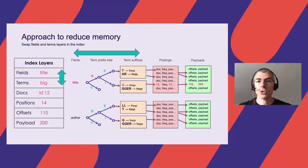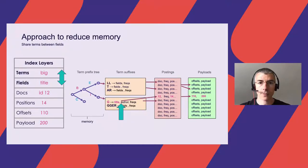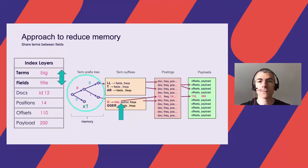To solve the memory and performance issues, the idea is to swap the index layers between fields and terms. Instead of fields as the first layer and terms as the second, terms become the first layer and fields become the second. The field information is now stored per term in the index. When we seek the term 'big', we now look at the field information directly in the dictionary. This way, we share the terms of all fields in a single prefix tree, which is very compact compared to the 150 separate prefix trees we had before.